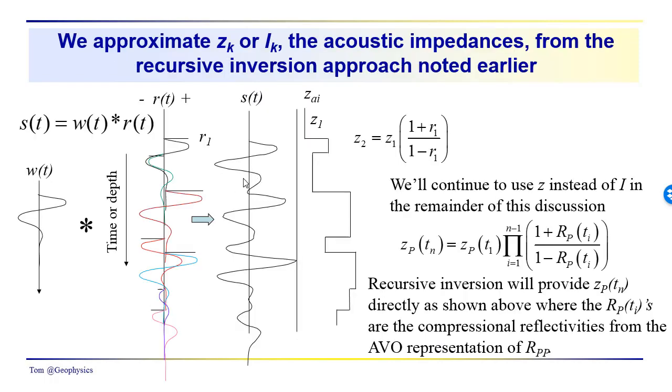We talked about the inversion process, the synthetic seismogram, the reflectivity sequence - the convolution of the wavelet with the reflectivity sequence would give us our seismic response, and we could work backwards from our observed seismic response to get the impedances, where z2, the next impedance here, would be equal to z1 times 1 plus r1, this reflection coefficient, over 1 minus r1.